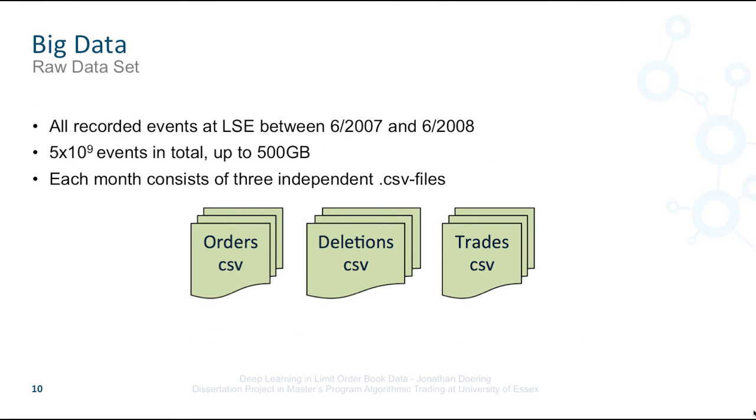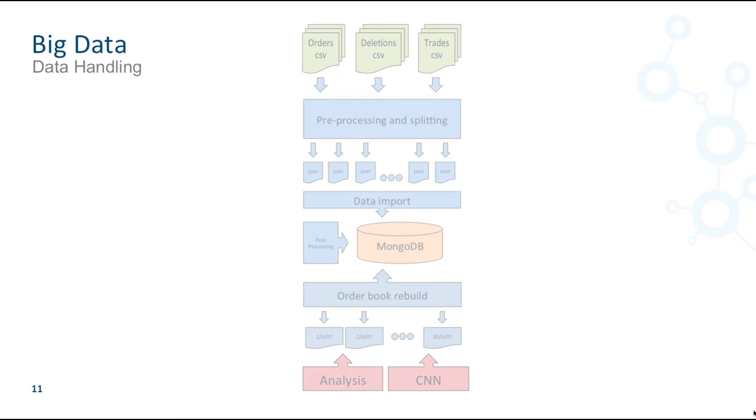The task to build a deep learning training set can be seen as a typical big data practice. Fortunately, the LSE order book dataset from Economics Department at University of Essex can be used. This dataset includes the whole order flow recorded at London Stock Exchange between June 2007 and June 2008. The whole set consists of almost 5 billion events and comes in unsorted, comma-separated text files. Depending on compression rate and file format, the whole set has a size up to 500 GB.